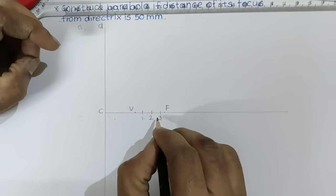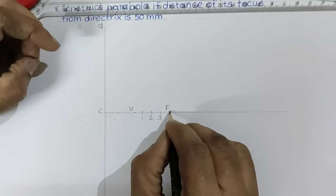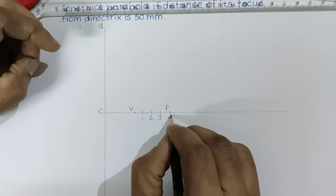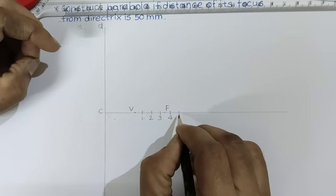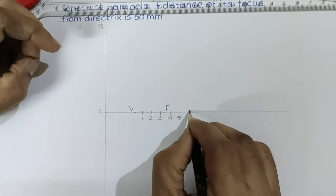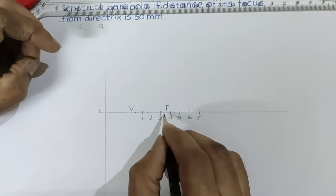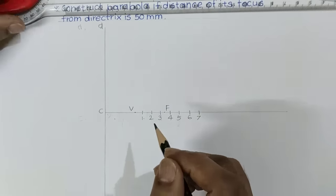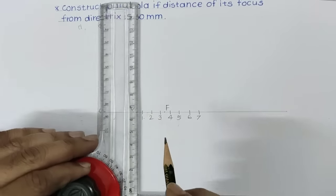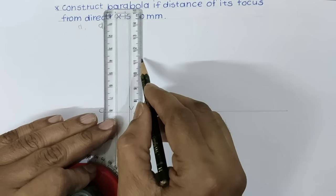Even if you take equal distance, it is okay. Even if you don't take equal distances, then also it is okay. You can take 6 to 7 points. You can include focus or you can exclude focus also. After that, draw vertical lines passing through all these points.